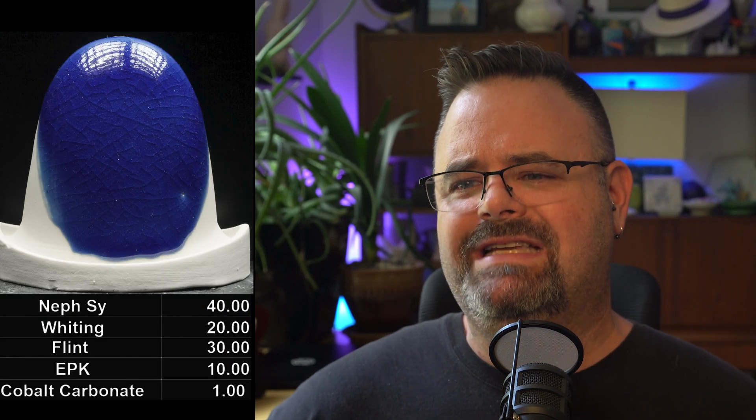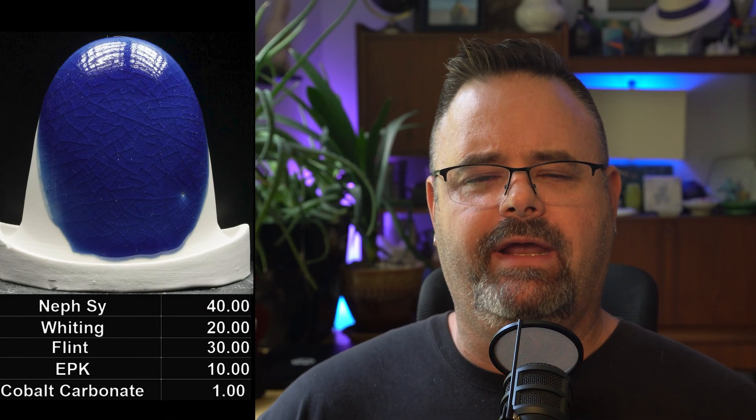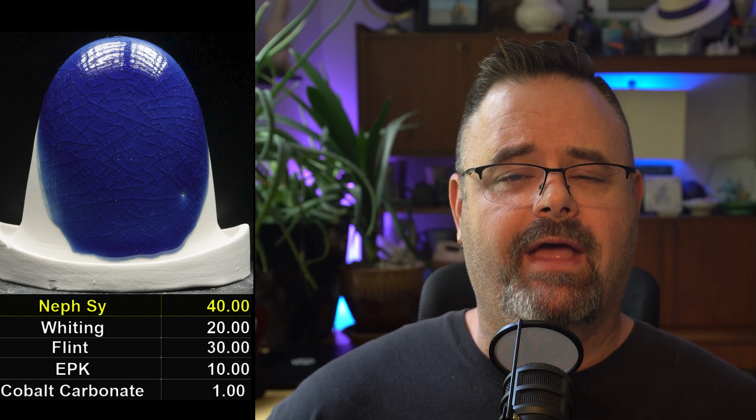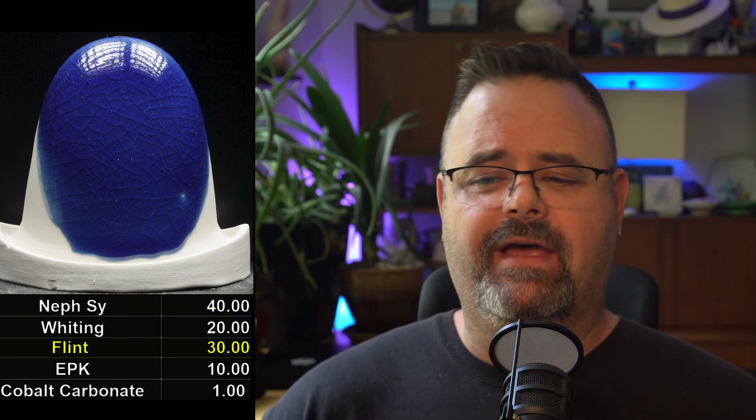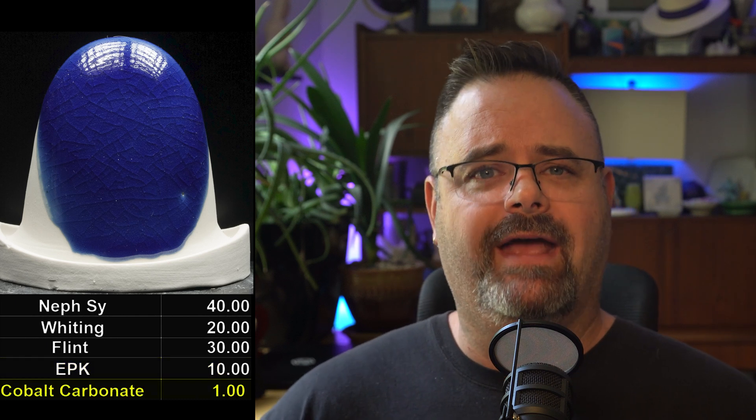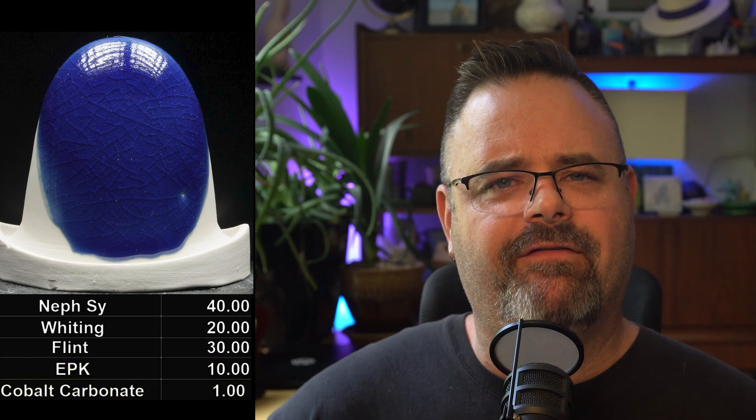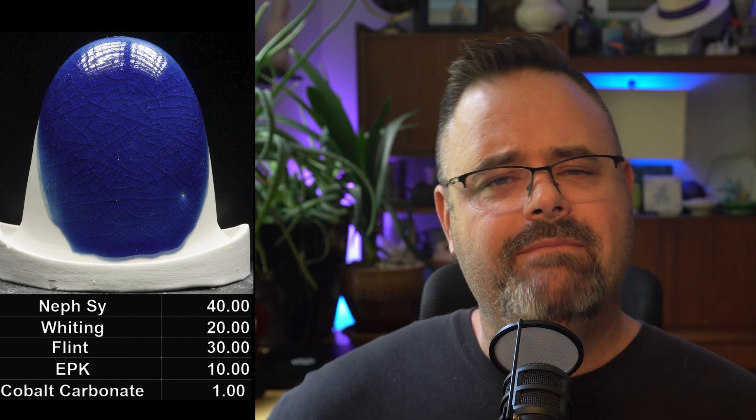To put this in a bit more context, here is a basic Cone 10 glaze with almost all the same ingredients: nepheline syenite at 40%, whiting at 20%, flint at 30%, EPK at 10%, also using cobalt as the coloring. But this is definitely a Cone 10 glaze. What's missing? What's missing is zinc. It's not zinc alone — zinc on its own will work at Cone 10 — but it's that combination of zinc and calcium that makes the Bristol reaction happen and brings glazes down to Cone 6.